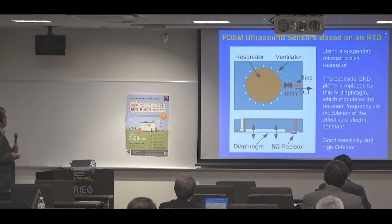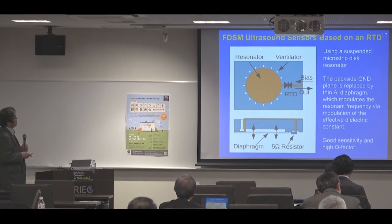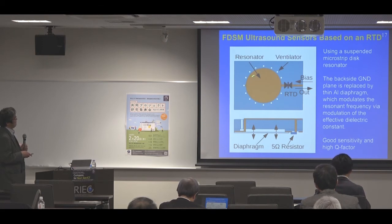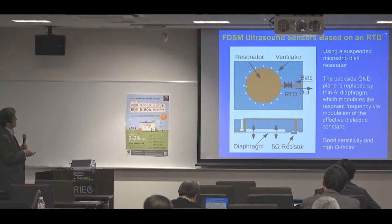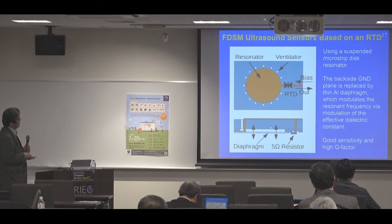Now let's move on to the second example: the FDSM ultrasound sensor based on the resonatomic diode oscillator. This is a schematic diagram of the sensor. It consists of a suspended microstrip disk-type resonator. The key point is that the backside ground plane is replaced by a thin aluminum diaphragm, which modulates the resonant frequency of the resonator. Good sensitivity and a very high Q factor can be expected for this type of sensor.